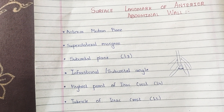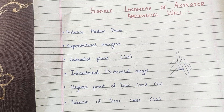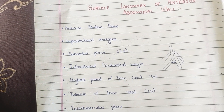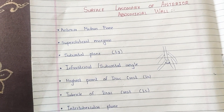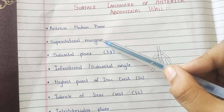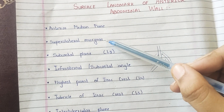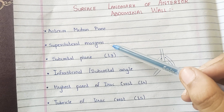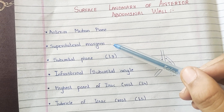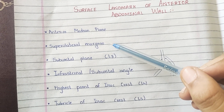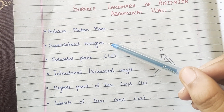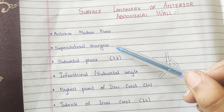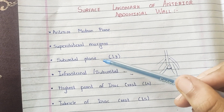The supra-lateral margins of the anterior abdominal wall are the right and left costal margins, formed by the costal parts of the seventh, eighth, ninth, and tenth ribs.